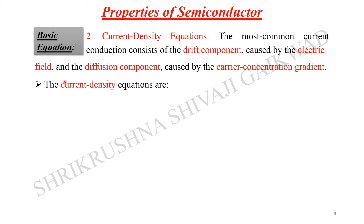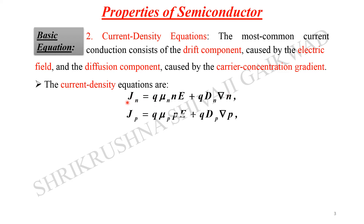The current density equations are: J_n = q·mu_n·E + q·D_n·(delta_n), where q is charge, mu_n is the mobility of electrons, N is the electron carrier concentration, E is the applied electric field, D_n is the Einstein diffusion coefficient, and delta_n is the carrier concentration gradient. Similarly, we can write the hole current density J_p, and the total conduction current density is the sum of both J_n and J_p.